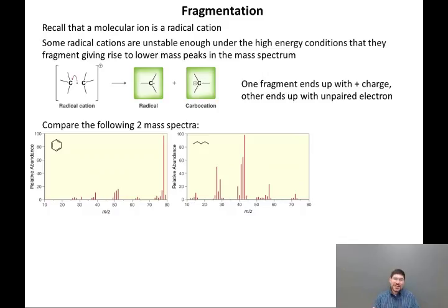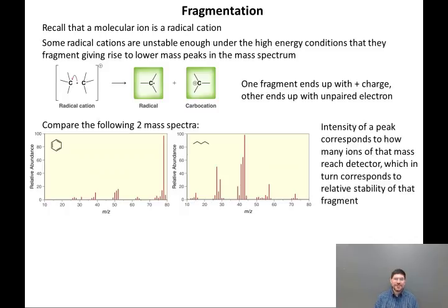Sometimes fragmentation is extensive, and sometimes fragmentation is not extensive. I want you to look at these two mass spectra right next to each other. We have a mass spectrum of benzene and a mass spectrum of pentane. Both hydrocarbons, both about the same size. Benzene has a very large molecular ion at 78, which is its molecular mass.